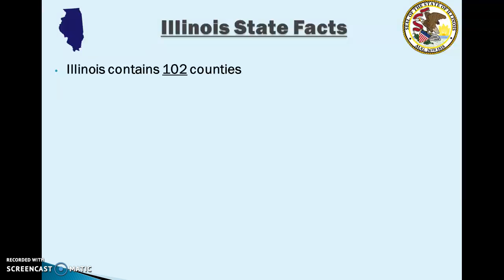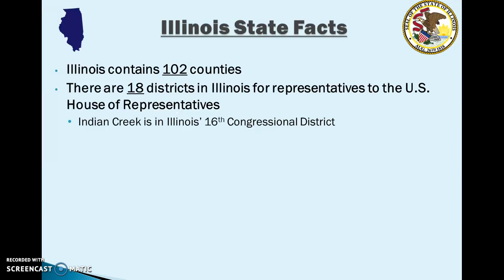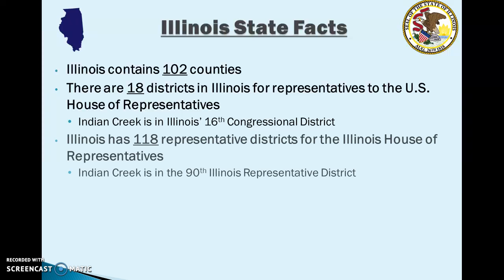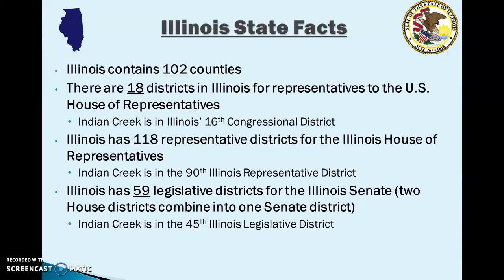Here are some state facts about Illinois. Illinois contains 102 counties. There are 18 districts in Illinois that send representatives to the United States House of Representatives, and Indian Creek is in the Illinois 16th Congressional District. Illinois has 118 representative districts for the Illinois House of Representatives, and Indian Creek is in the 90th representative district. Illinois has 59 legislative districts for the Illinois Senate — two House districts are combined into one Senate district — and Indian Creek is in the 45th Illinois legislative district.